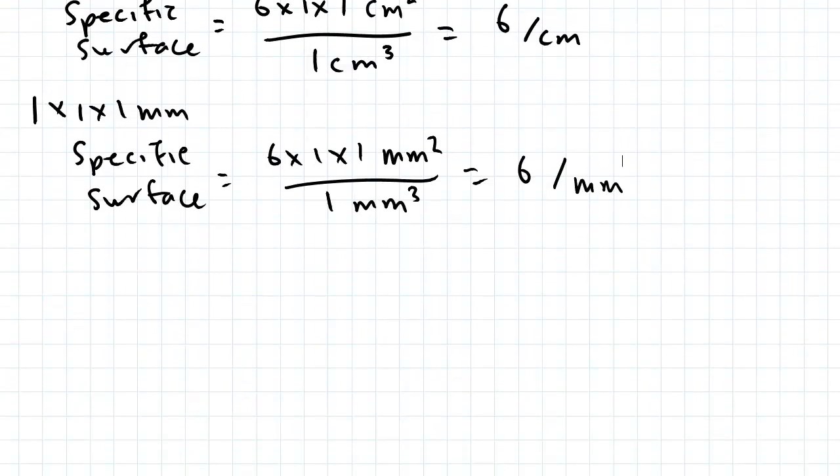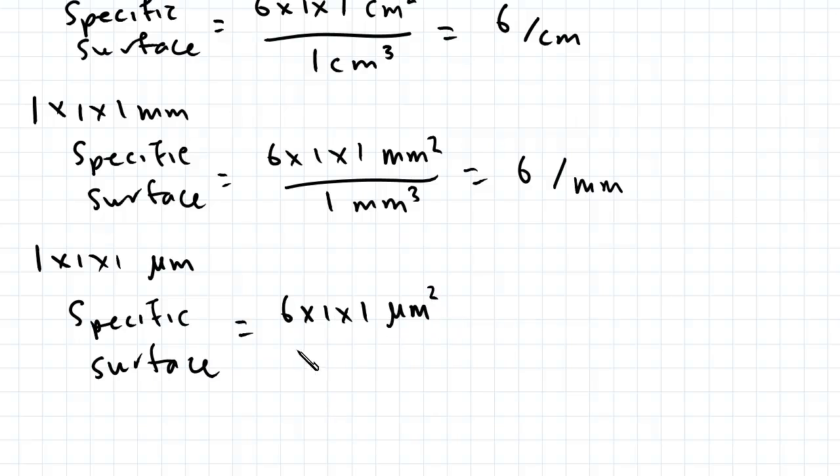Let's just do one last example. So let's say we have a 1 by 1 by 1 micrometer cube. The specific surface will work out to be 6 by 1 by 1 square micrometer.